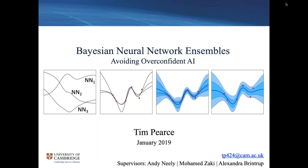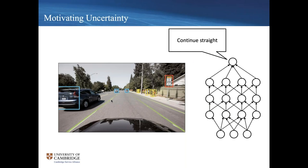I'm going to start with a slightly cartoony example of why we might want to be able to quantify uncertainty in AI applications. We have a situation where a neural network is part of a self-driving car system, taking as input the video feed from the top of the car and outputting actions the car should take.